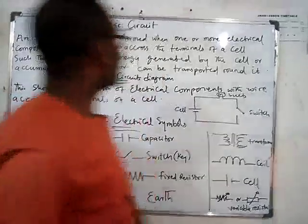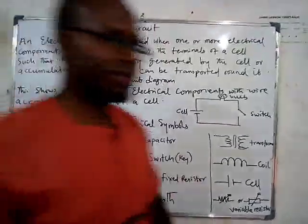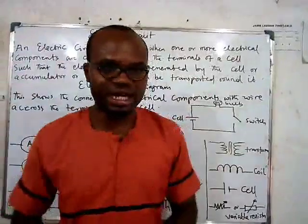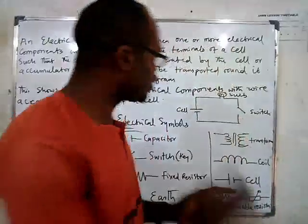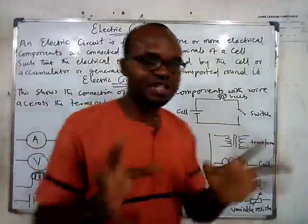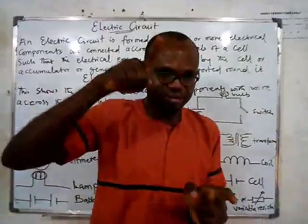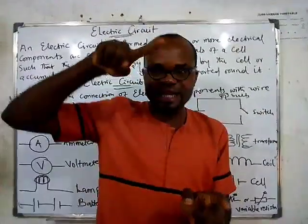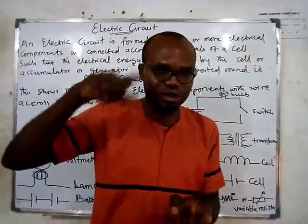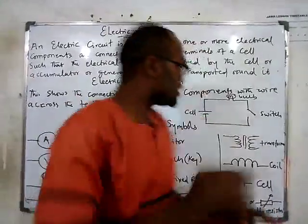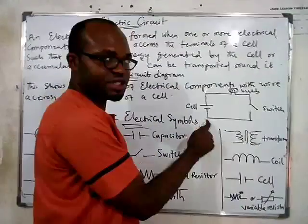Welcome. Today we are going to be learning about electric circuits. Electric circuit is simply the connection of electrical components using a wire, so that it can enable the flow of current or charges. This is an example of an electric circuit.